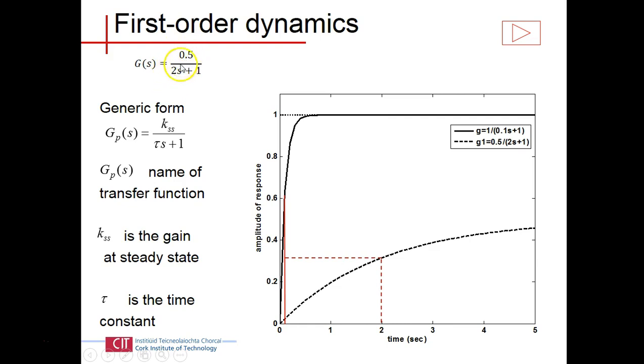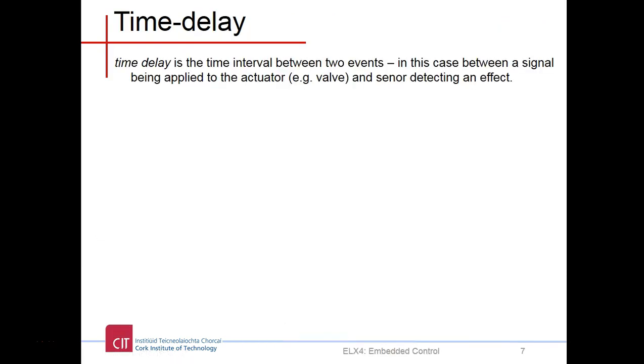The parameters associated with pure first order systems: the gain, my steady state gain which is my change in output divided by change in input, and my time constant, which is the time it takes the response to change by 63 percent.